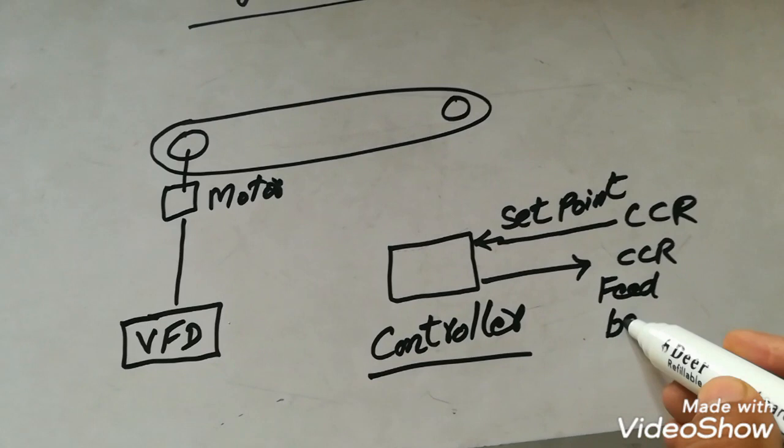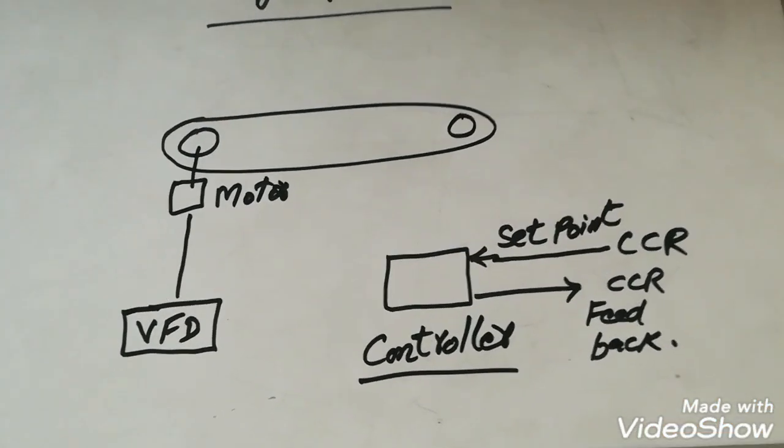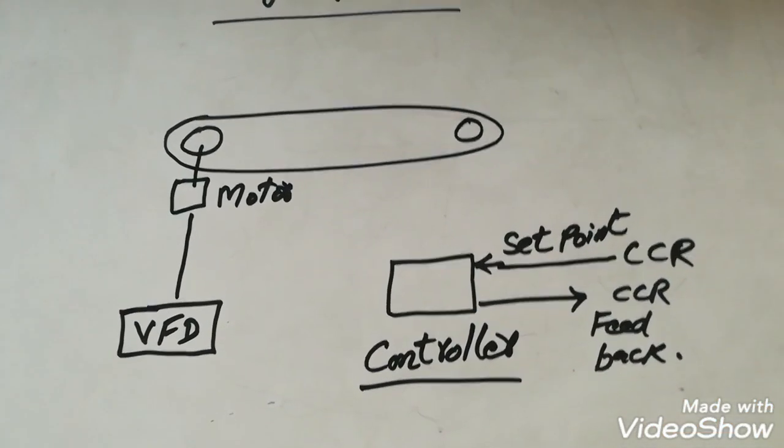This controller output, which is also analog signal to the control room, is the feedback. So it will show to the operator what is the feedback of the wave feeder.